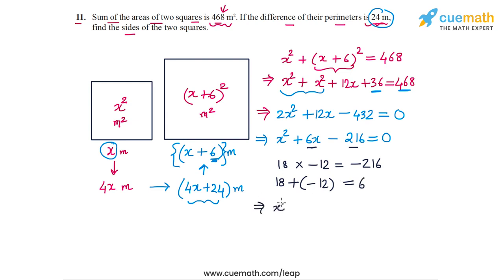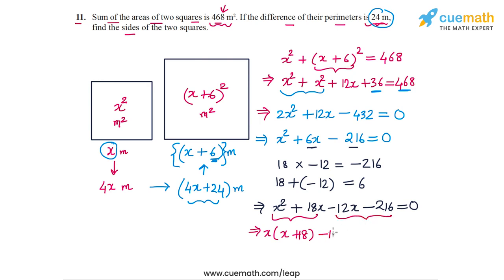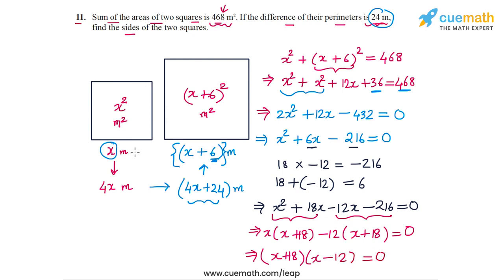Splitting the middle term: x squared plus 18x minus 12x minus 216 equals 0. From the first pair, taking out x gives x times (x plus 18). From the second pair, taking out minus 12 gives minus 12 times (x plus 18). Taking out the common factor (x plus 18) gives (x plus 18)(x minus 12) equals 0.